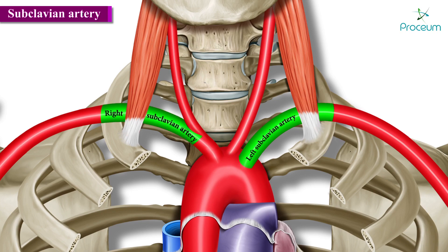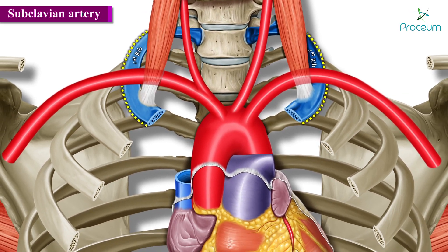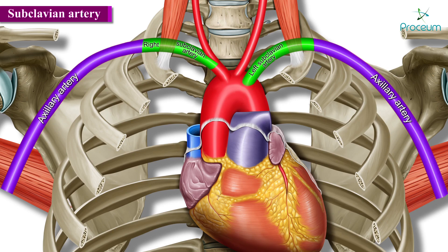These two major arteries are located in the thorax beneath the clavicles. Once they pass the lateral border of the first rib, they officially form the axillary arteries — meaning the subclavian artery ends as the axillary artery. The subclavian artery is therefore the chief source of upper limb arterial supply.